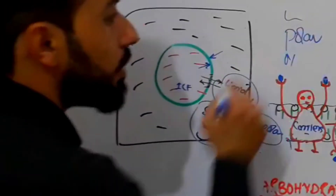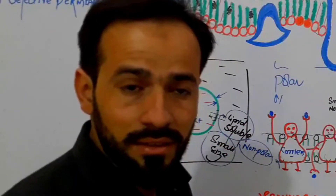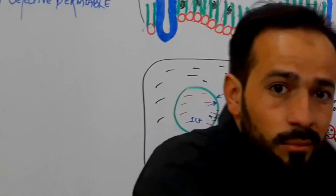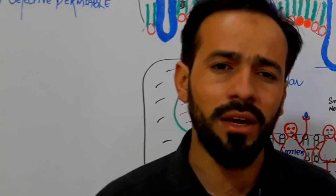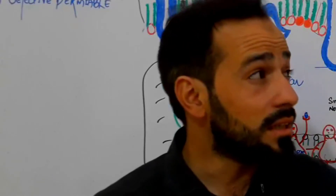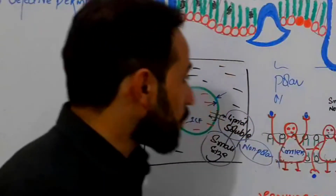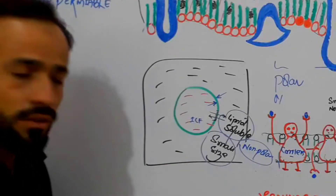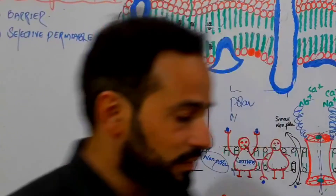But polar substances, non-lipid-soluble substances, and large molecular substances — how will they enter or leave the cell? They will use certain special channels. For example, like a room with windows — air can move through small windows but a person cannot, so they use the door. Similarly, the cell membrane is very selective; it does not let everything come in or go out. This is the selective permeability function.